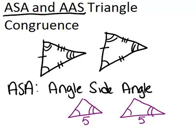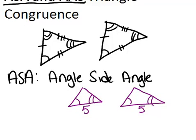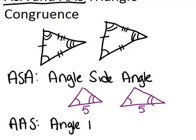The other shortcut is AAS. And AAS, as you might be able to guess, stands for Angle, Angle, Side.